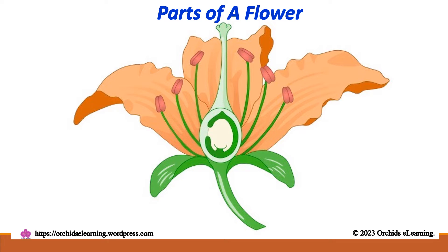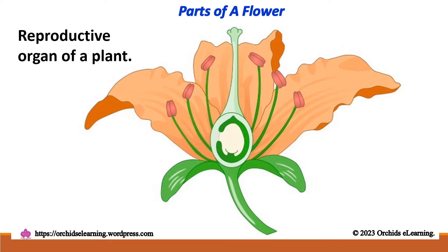Parts of a Flower. Flowers are introduced as the reproductive part of a plant. They are not only involved in reproduction but are also a source of food for other living organisms. Let us see the different parts of a flower.